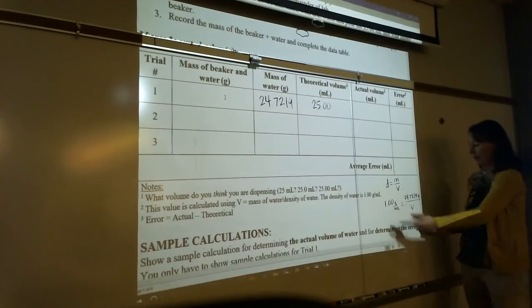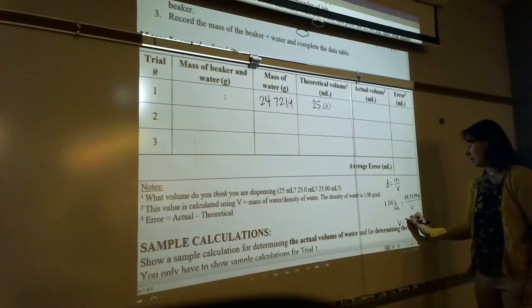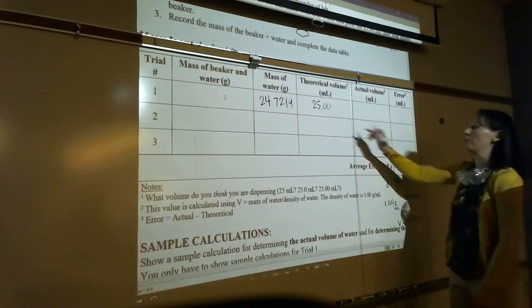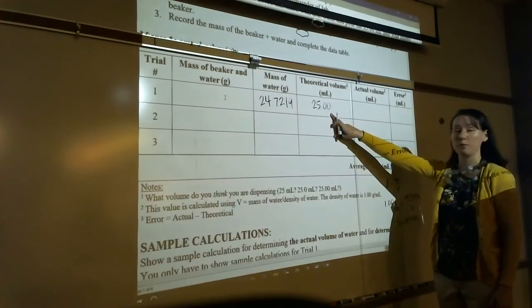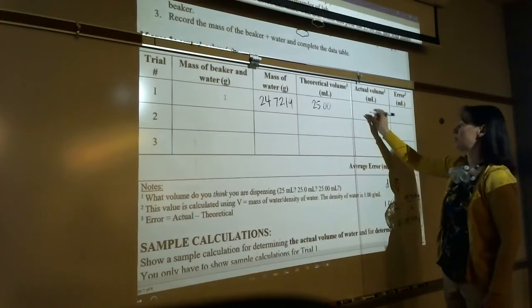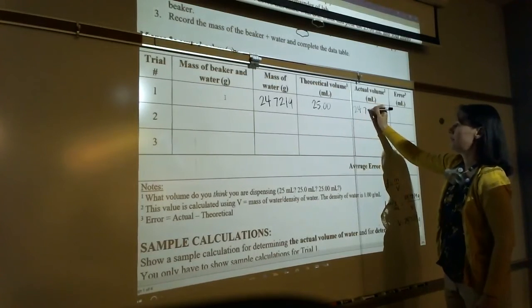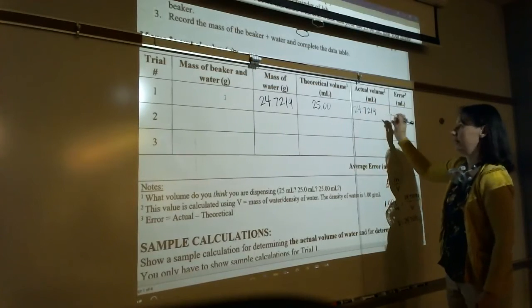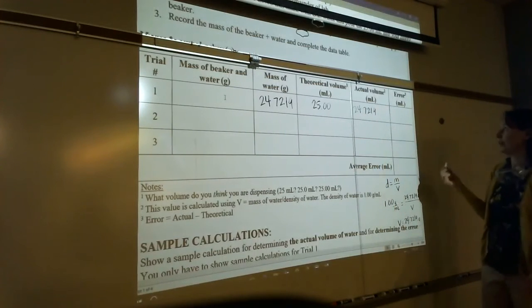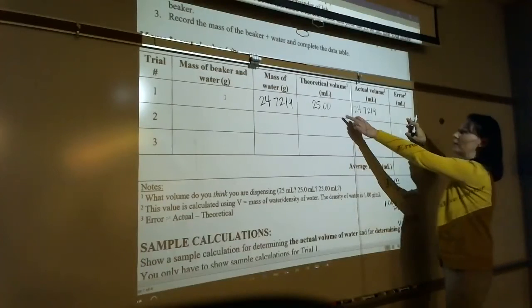So that would be 24.7219 grams over V is what you're solving for. Well, because this is 1, right, V is just 24.7219 grams. So you thought you were dispensing 25.00. You actually dispensed 24.7219 milliliters, right? So what's the error?